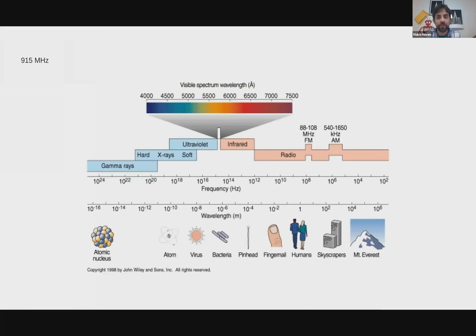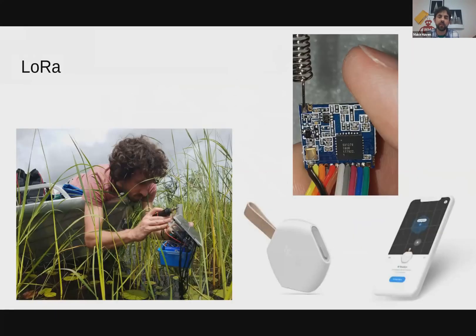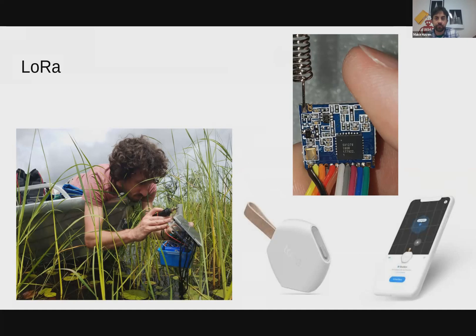There's a very big range in the electromagnetic spectrum. As you look toward skyscrapers and mountains, you're in the larger, longer wavelengths. LoRa sits in the very large wavelength region, which means that with very low energy it can go through a lot of obstacles and be deployed over long distances.